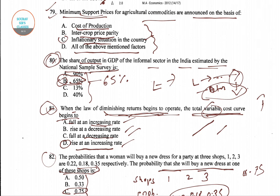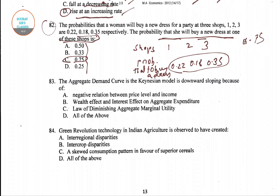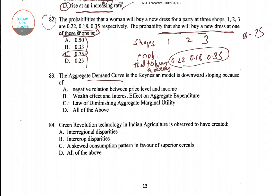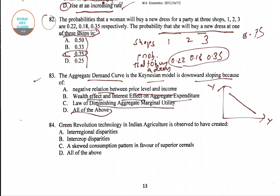Now we will go to question number 83: Aggregate demand curve in the Keynesian model is downward sloping because — options include relationship between output and price, negative relationship between price and income, wealth effect and interest effect on aggregate expenditure, and law of diminishing aggregate marginal utility, and all of the above. The right answer is option B — wealth effect and interest effect on aggregate expenditure cause the aggregate demand curve in the Keynesian model to be downward sloping.